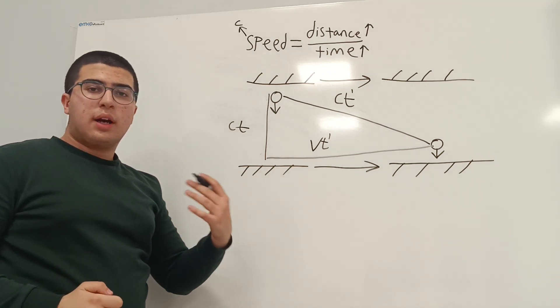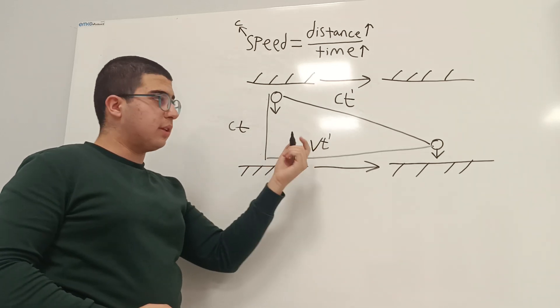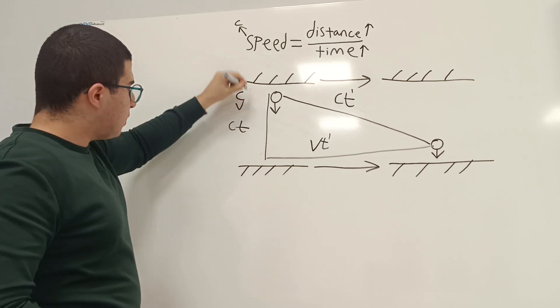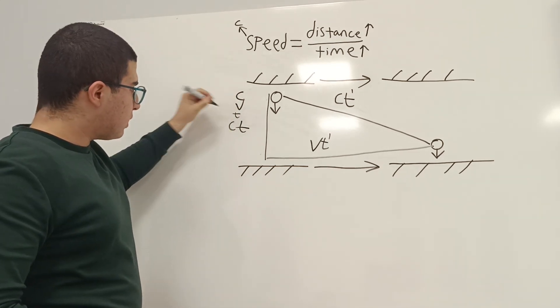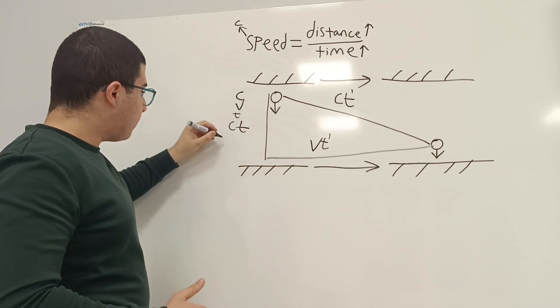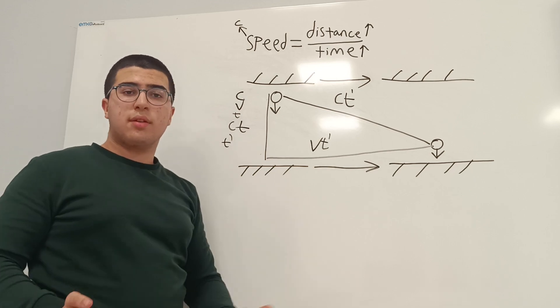So, to understand the relationship between the speed of light, the speed of the spaceship, the time we experience as an inertial reference frame, and the time they experience, t prime, we can use the Pythagorean theorem for this.